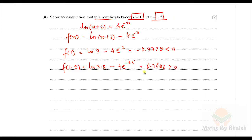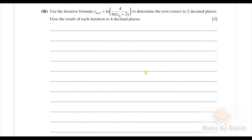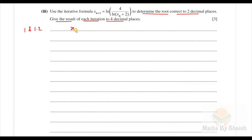Let's do the next part: use the iterative formula x_(n+1) = ln(4 / (x_n + 2)) to determine the root correct to two decimal places, giving each iteration to four decimal places. From the second part, the root lies between 1 and 1.5, so we take the initial value x_0 = 1.2.